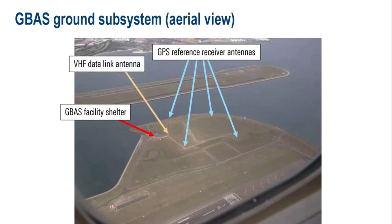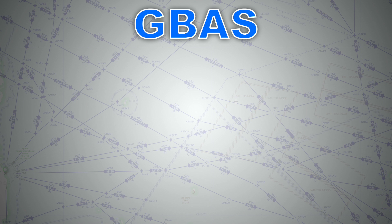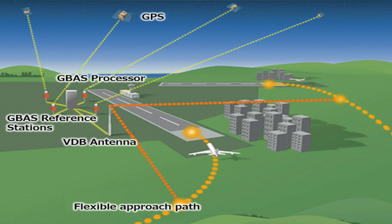Now let's look at the GBAS advantages. Unlike ILS, where every single runway must be equipped with localizer and glide slope antennas to provide approaches from both ends — with high maintenance costs and yearly calibration — GBAS requires only one system fitted on the airfield to serve all runways with precision approaches, plus non-linear or curved approaches.